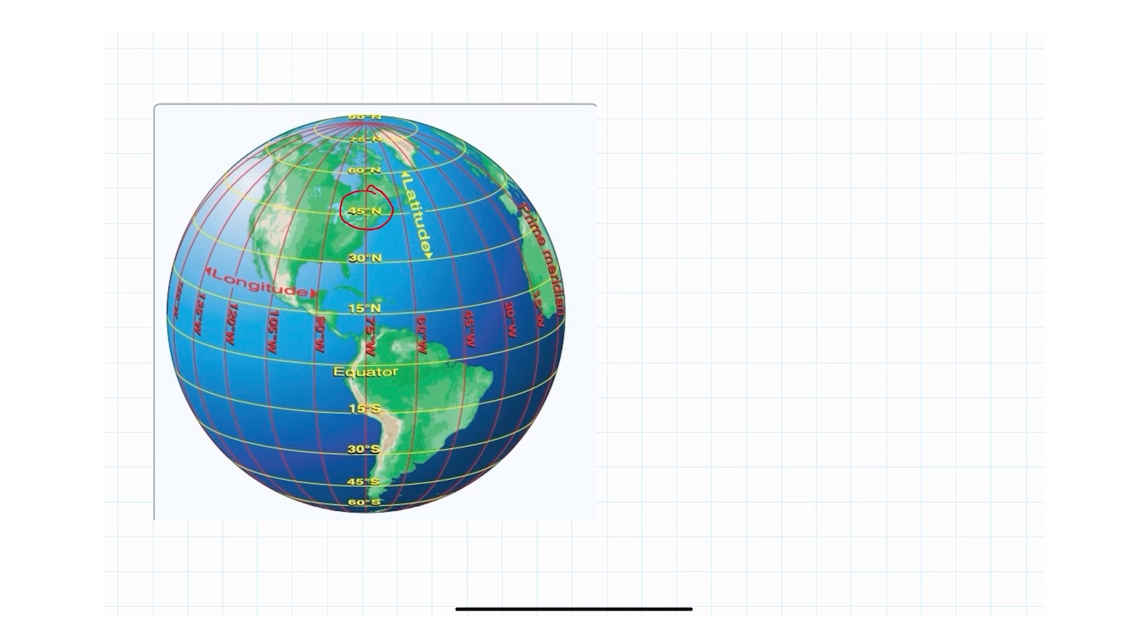So the takeaways: latitude lines run horizontal or laterally. Longitude lines run vertically. Longitude lines all go to the North Pole and South Pole. And of course, latitude lines do not. They're just north or south of the equator.